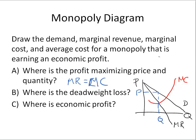Next question: where is the deadweight loss? Deadweight loss arises because in perfect competition we would be at point A — a lower price and higher output. Monopoly restricts output and raises price. So the deadweight loss is this triangle right here, which we'll call area BAD. Point A is where perfect competition would be, which is our standard of efficiency where Price equals Marginal Cost.